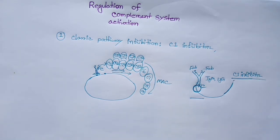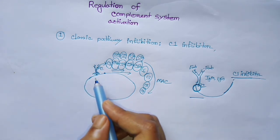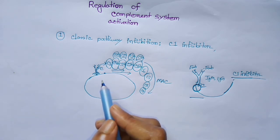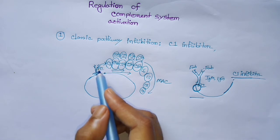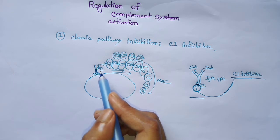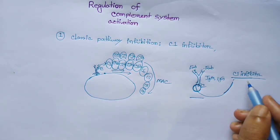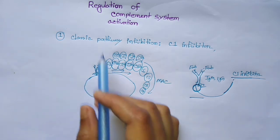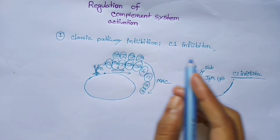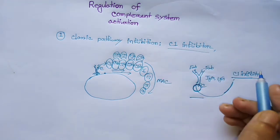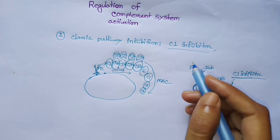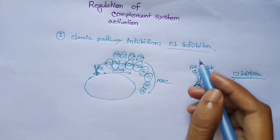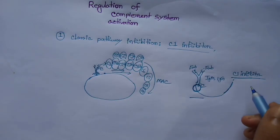Whenever the antibody binds with an antigen or any type of bacteria, the C1 complement protein takes the upper hand and binds to the FC portion of the antibody, and the C1 inhibitor is displaced. So this is the classic pathway inhibition by the C1 inhibitor, which is normally present in our body in sufficient amounts.